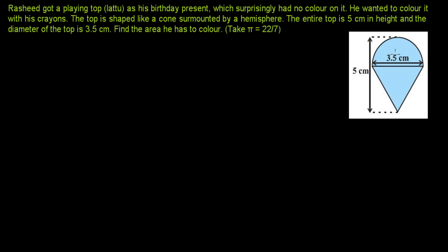Here is the cone surmounted by the hemisphere. The entire top is five centimeters in height, so the total height of the top is five centimeters. The diameter of the top is three point five centimeters, so the radius will be three point five divided by two. This radius is the same for both the cone and the hemisphere. The question asks us to find the area he has to color.